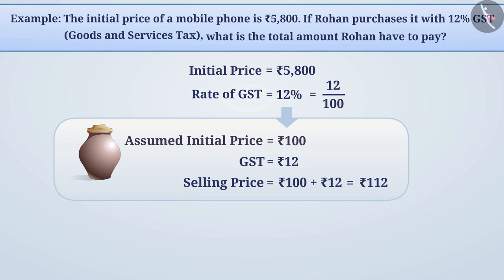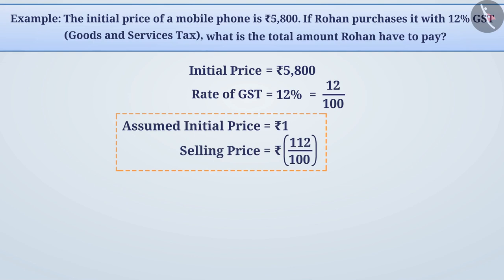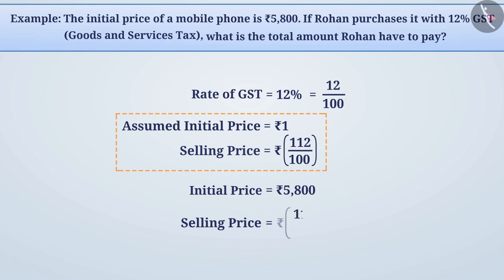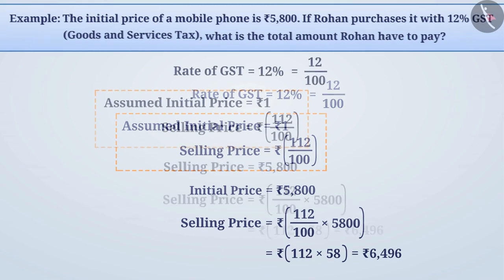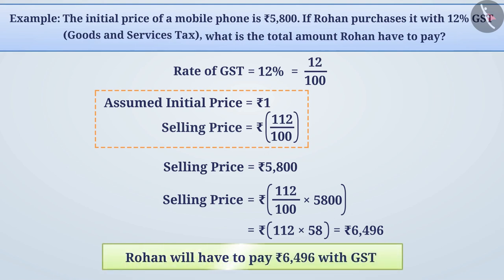In this way, when the initial price is 5,800 rupees, the selling price will be 112 divided by 100, multiplied by 5,800 rupees, which equals 6,496 rupees. After adding GST, Rohan will have to pay 6,496 rupees as the total cost of the mobile phone.